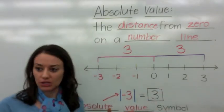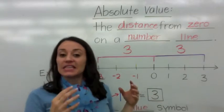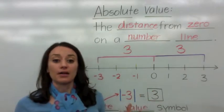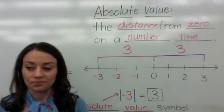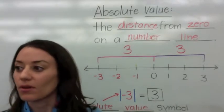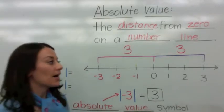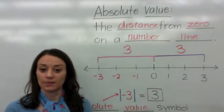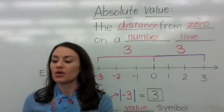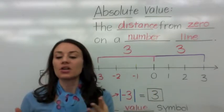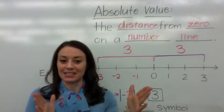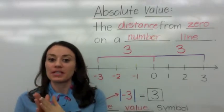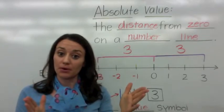Absolute value — write this down now. The distance from zero on a number line. So I gave you an example of a number line, and I said, when we're talking about absolute value, we're simply talking about the distance — how many spaces from zero to get to a particular number.